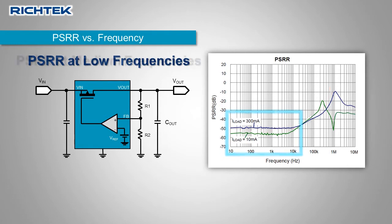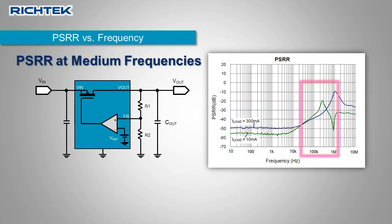When frequency increases, the loop gain reduces due to the bandwidth limit of the LDO, and the PSRR curves rise. Higher LDO load pushes the load pole upwards, so the unity gain frequency at high load is higher.